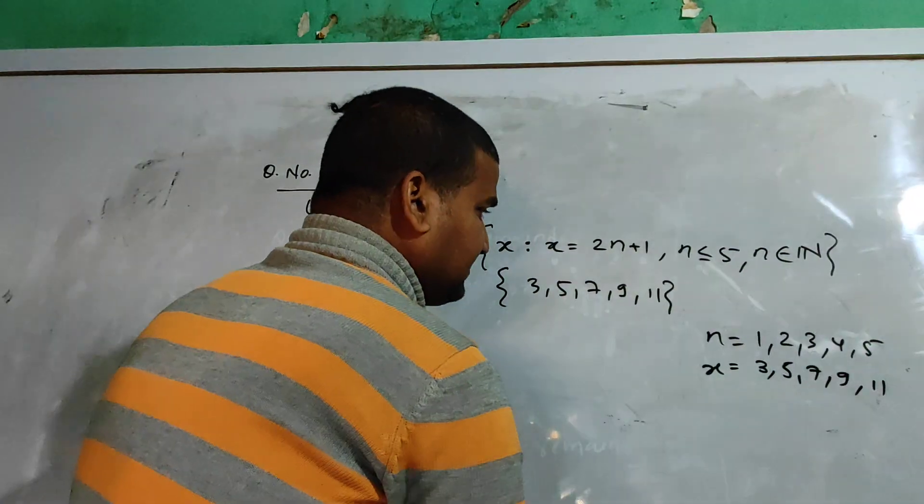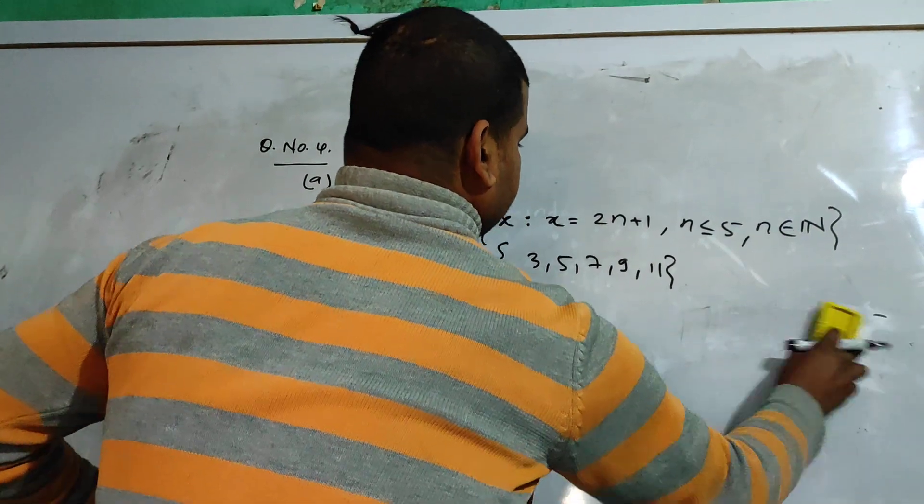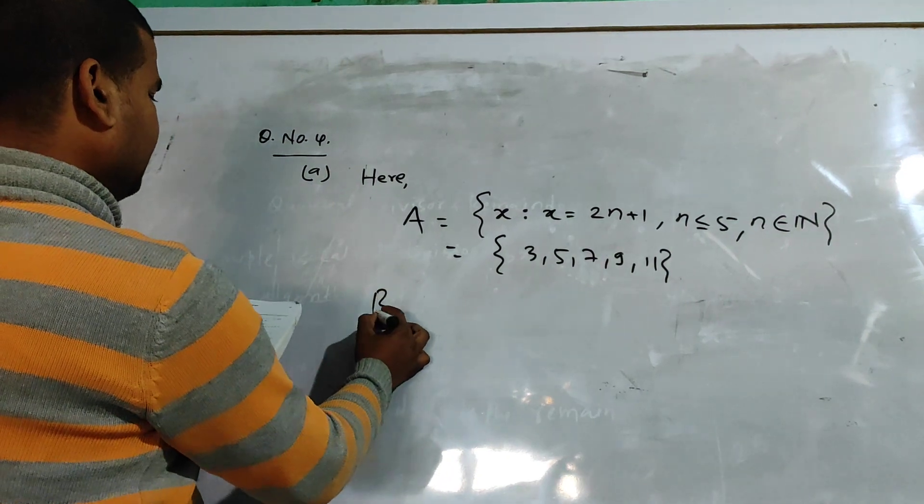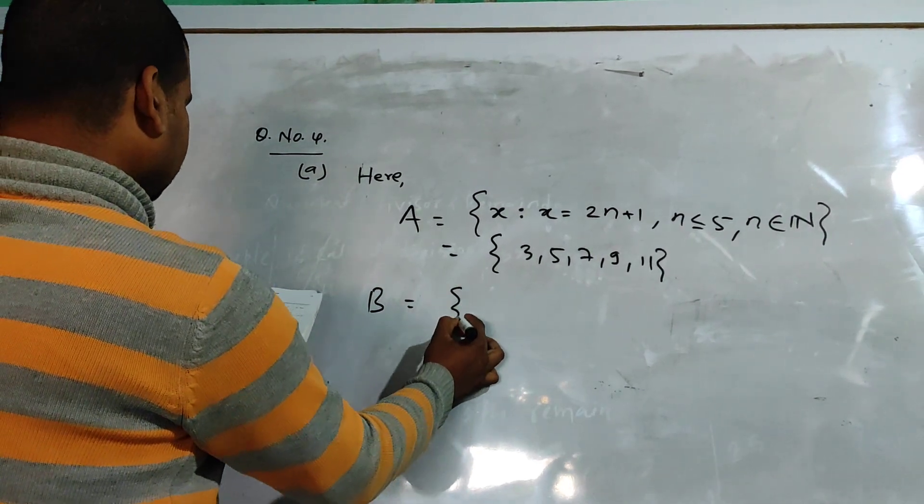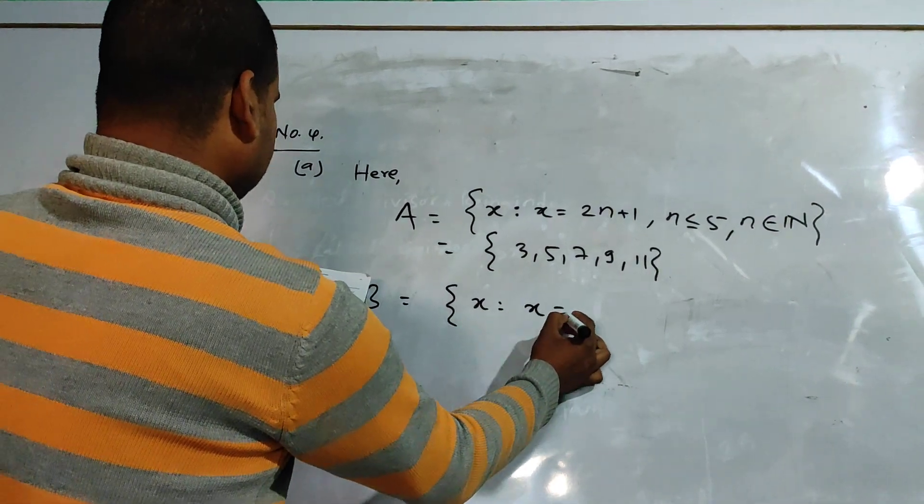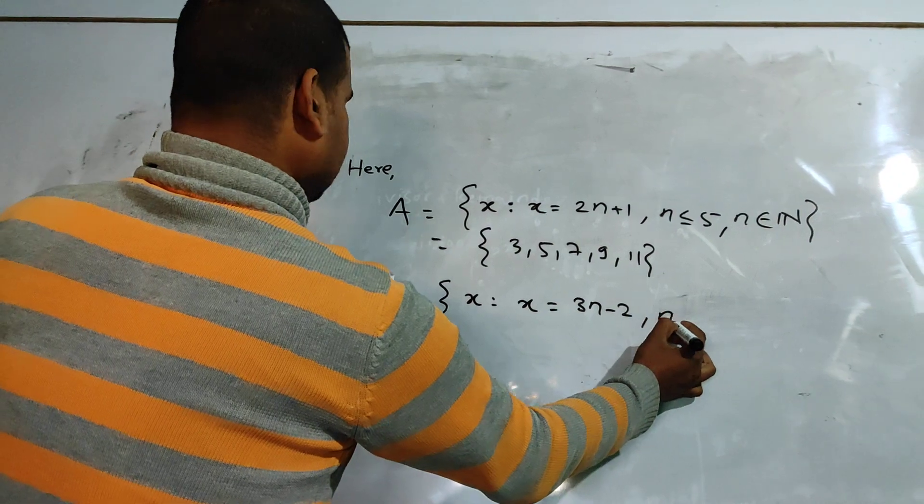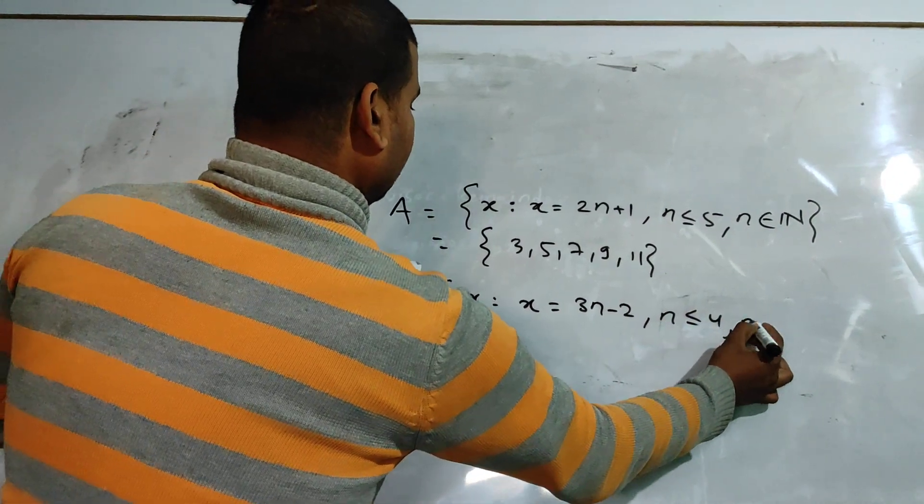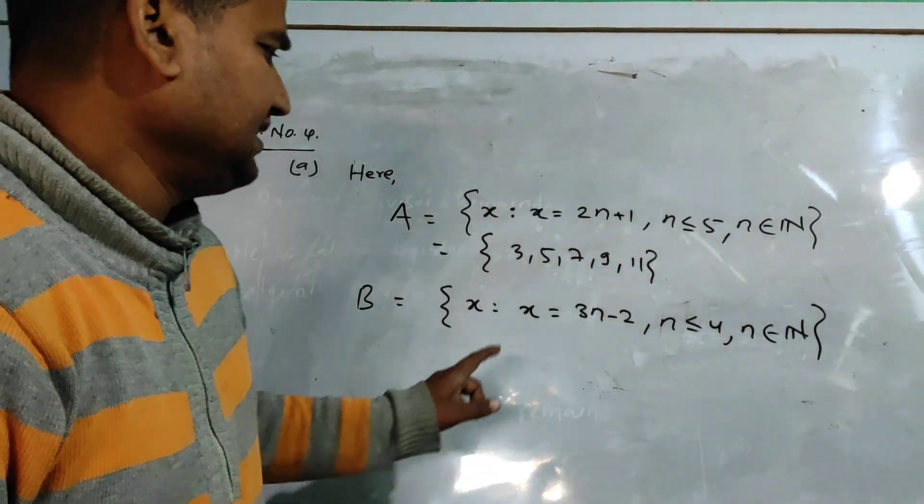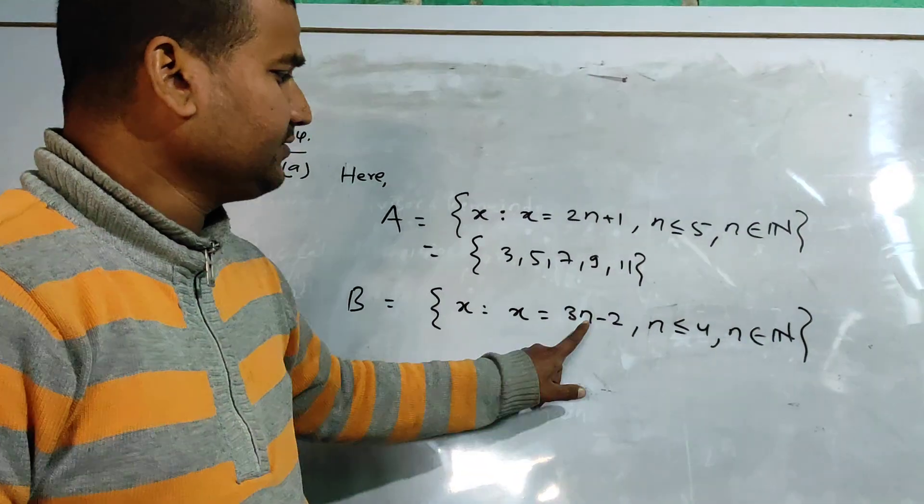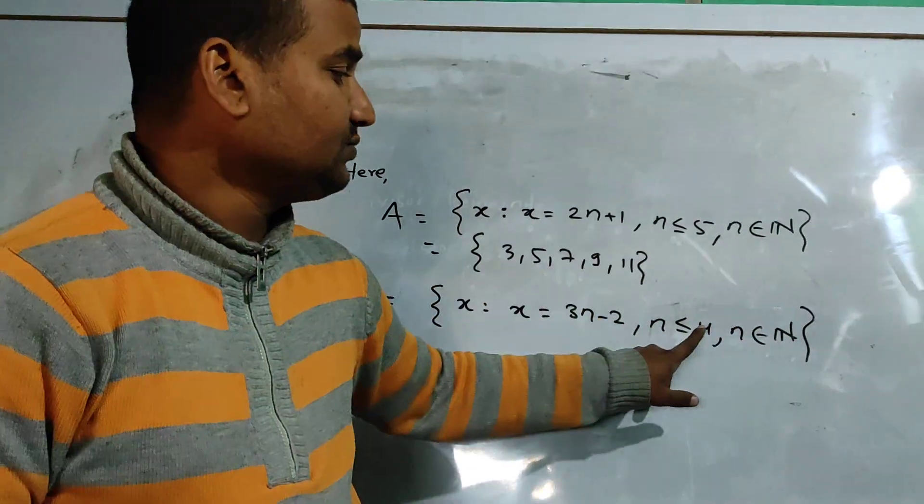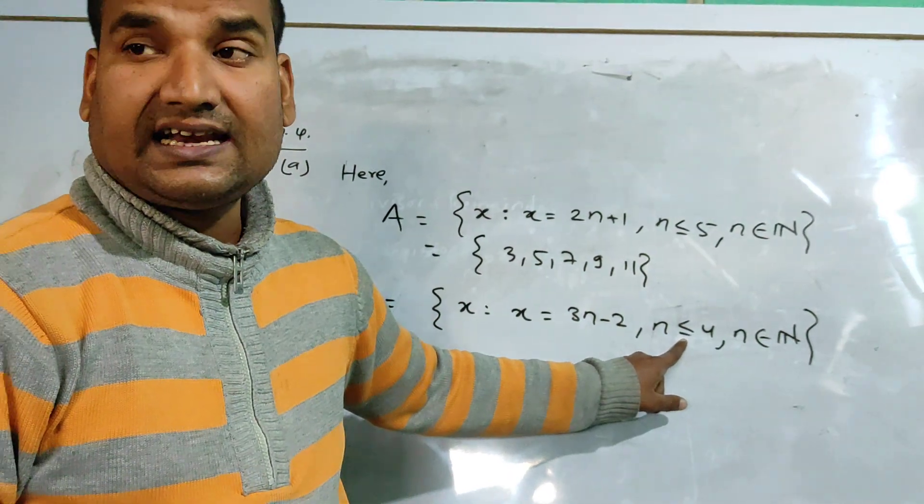Now we have set B. Set B is equal to x such that x equals 3n minus 2, n is less than or equal to 4, where n is a natural number.